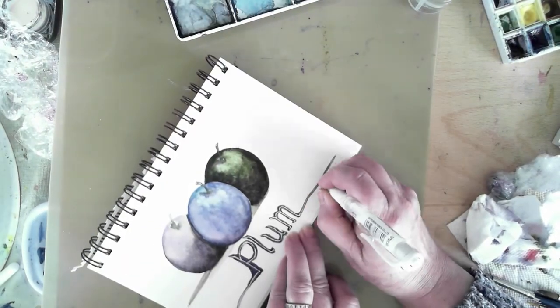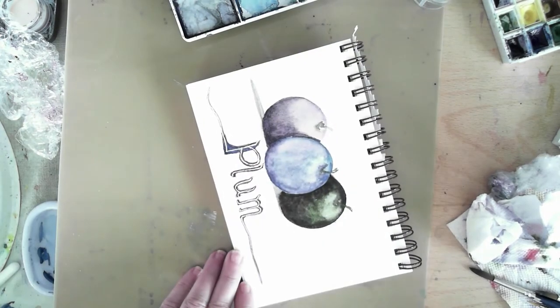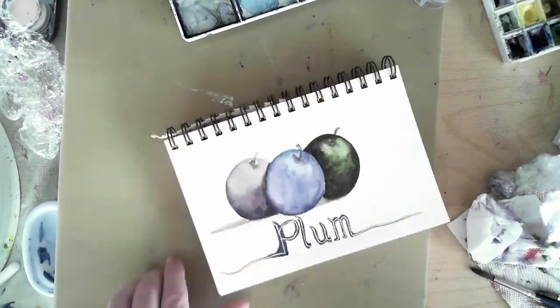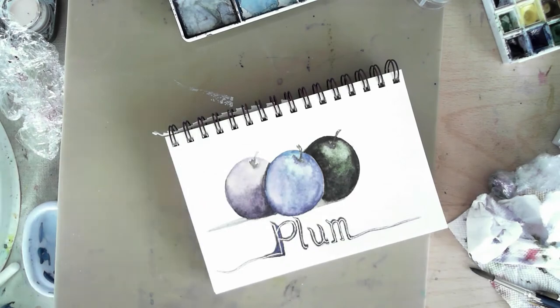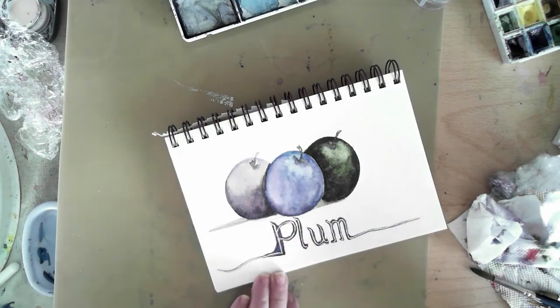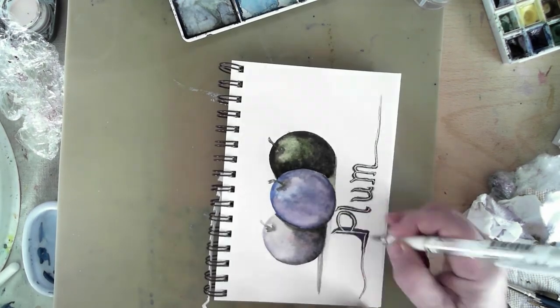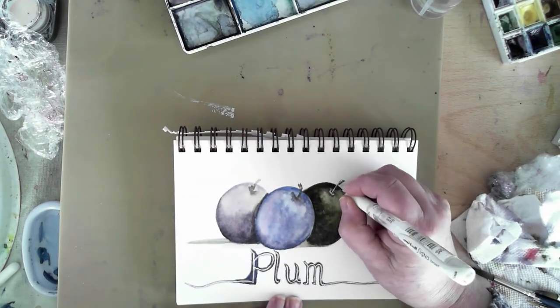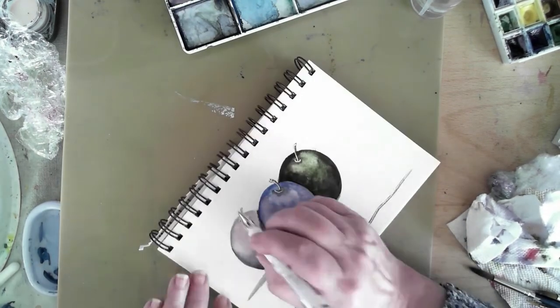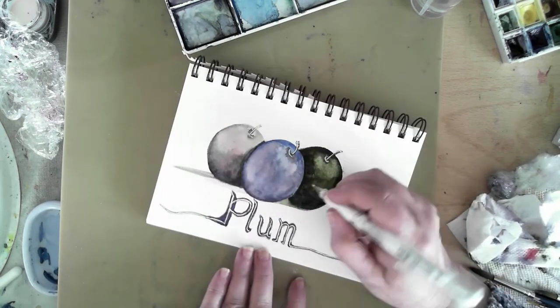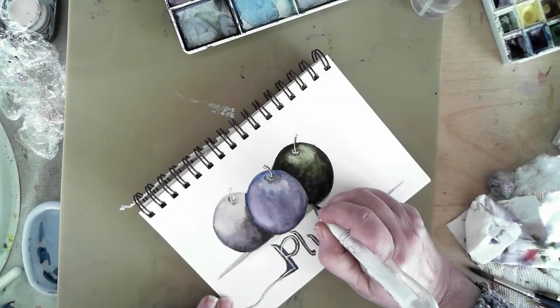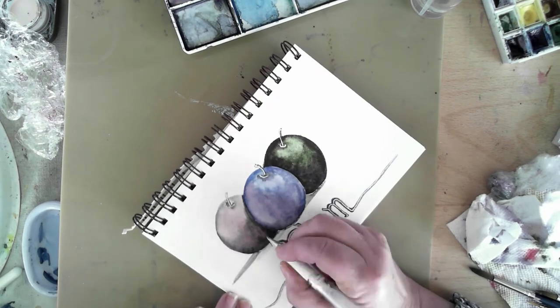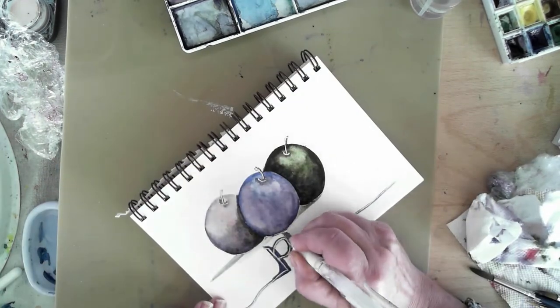Now sometimes that gel pen can be a little tricky. And I have to be mindful that I don't rub my hand across the page with that wet gel pen ink and smear it. So just a cautionary note there. And again, I'm just doing this freehand. It's just for fun and to add some definition to the letters and the shapes on the page. I'll be outlining the plums here in just a moment.